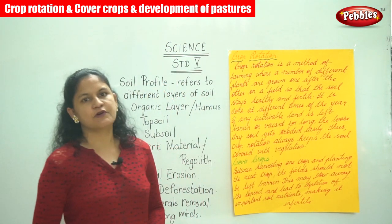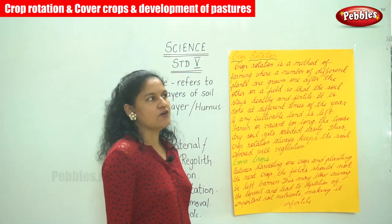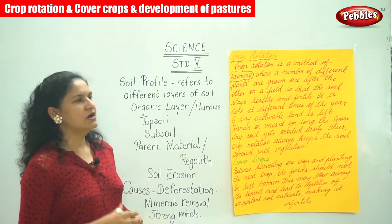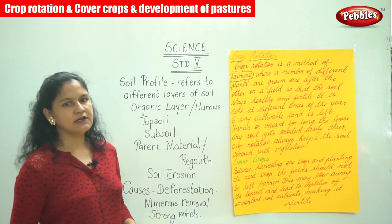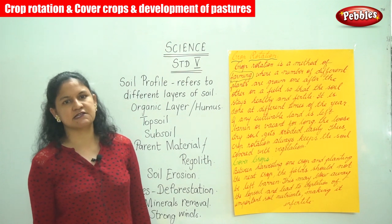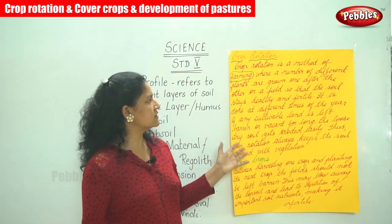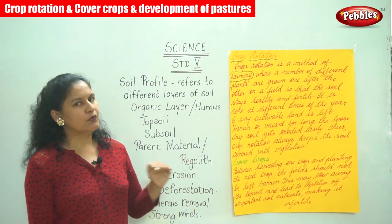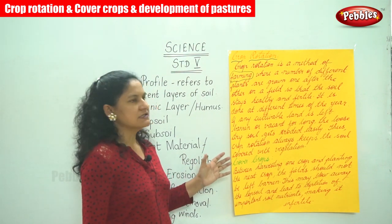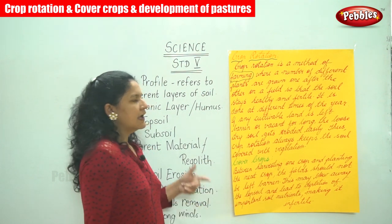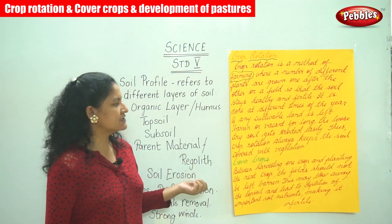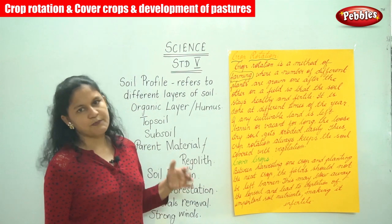The next method is crop rotation. Crop rotation is a method of farming where a number of different plants are grown one after the other on a field so that the soil stays healthy and fertile. Many different varieties of plants are grown one after the other without any gap so that the soil stays healthy and fertile. It is done at different times of the year.